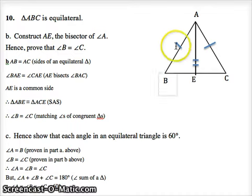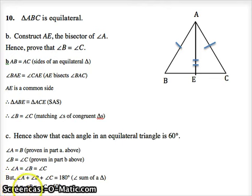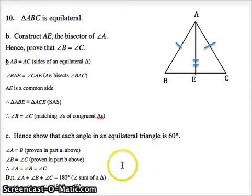We also know that angle A plus angle B plus angle C equals 180 degrees because it's the angle sum of a triangle. Since those three angles are also equal, angle A equals angle B equals angle C equals 180 divided by 3, which equals 60 degrees. Hence we've shown that each angle in an equilateral triangle is 60 degrees. That's the end of question 10.